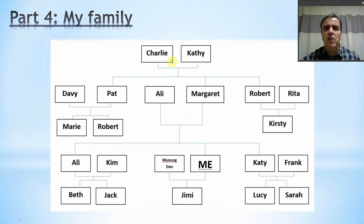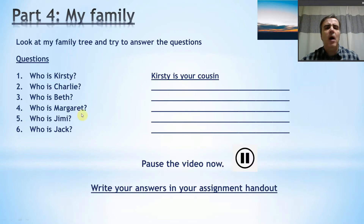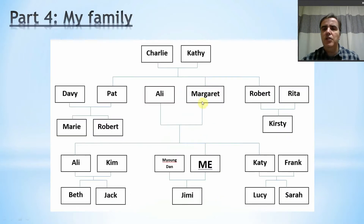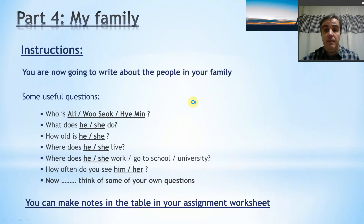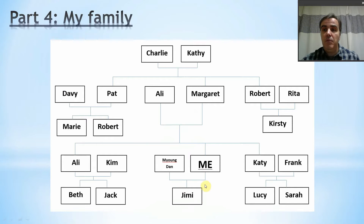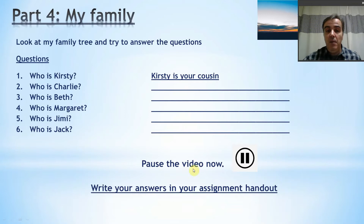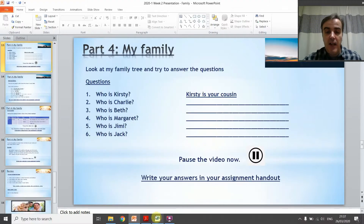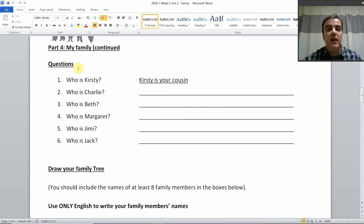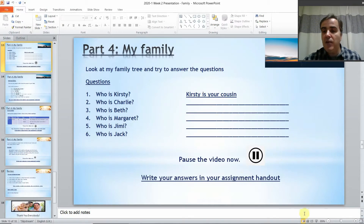Now I want you to look at my family tree and answer the other questions. Who is Charlie? He's up here — what is his relationship to me? Who is Beth? Beth is down here. Who is Margaret? Who is Jimmy? Jimmy is down here. Who is he? And who is Jack? Jack is down here. Everybody, pause the video and write your answers in the assignment worksheet.